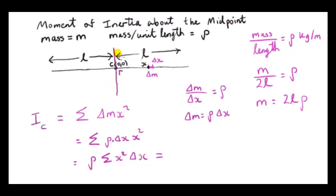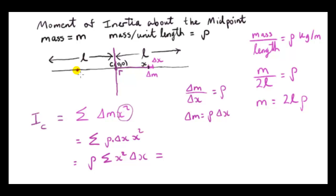We should be specific about which axis we are computing the moment of inertia about. The distance squared here is the perpendicular distance to an axis — specifically, an axis perpendicular to the rod passing through the center of mass. This is important: if the axis were oriented differently, the perpendicular distance would be different. The x-coordinate gives us that perpendicular distance, and squaring it means negative x values cause no problem.